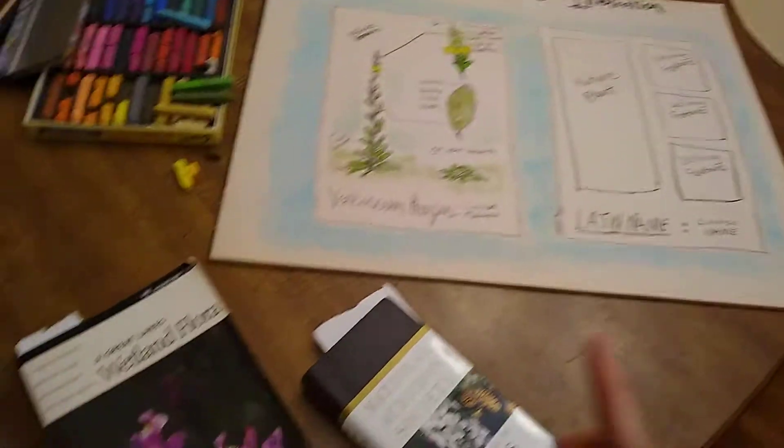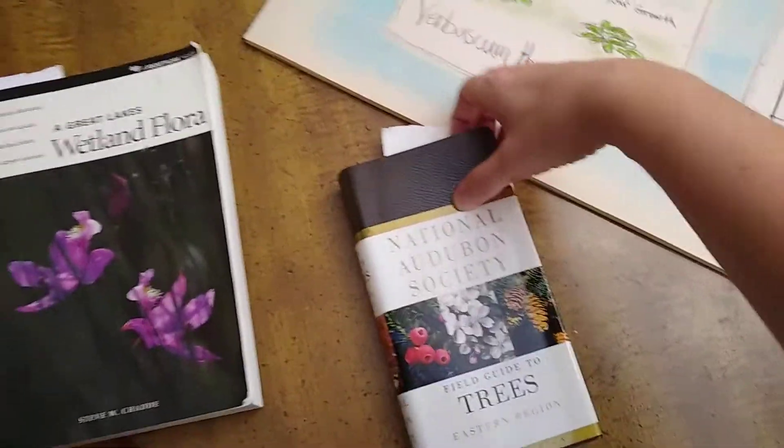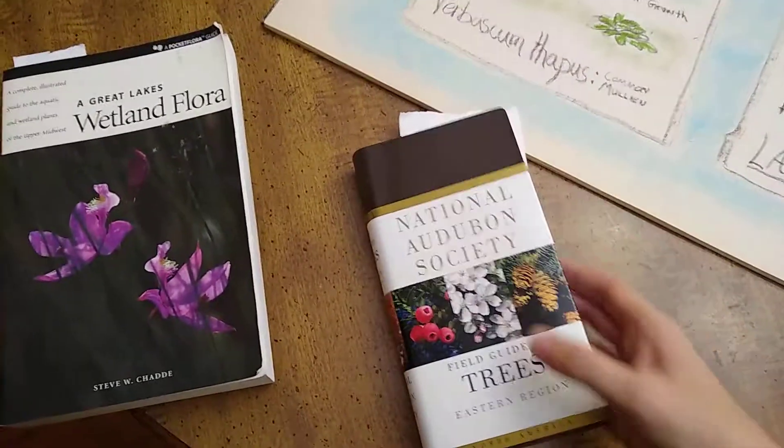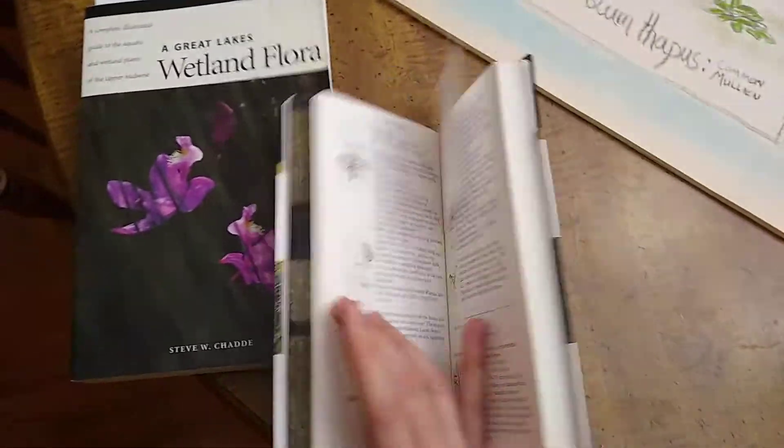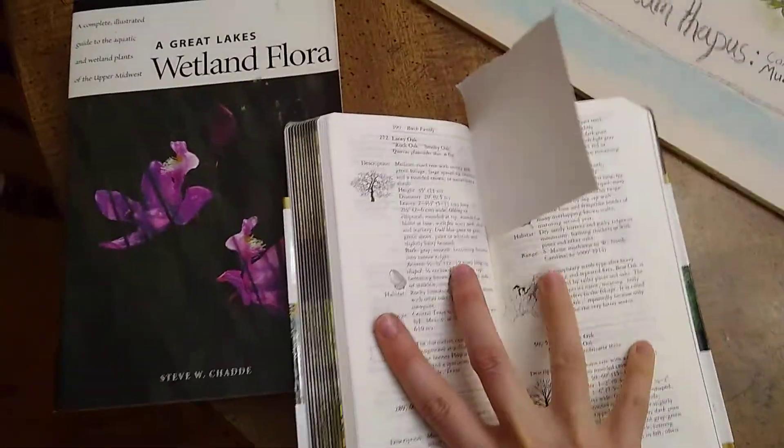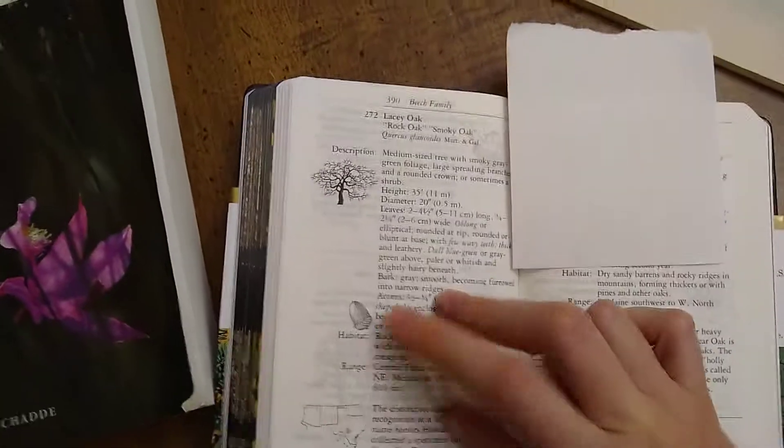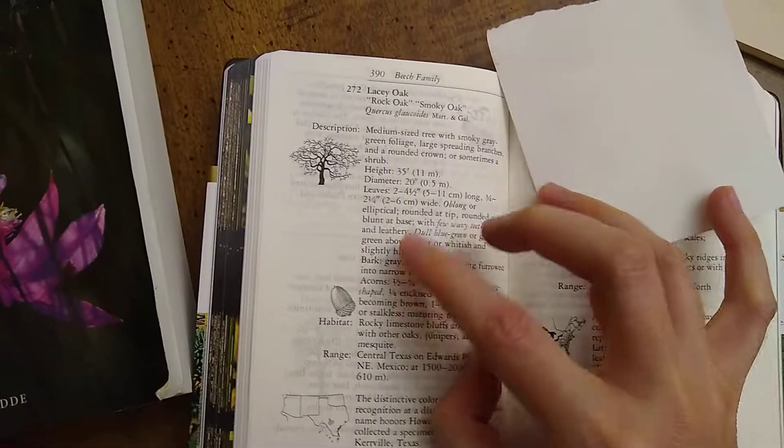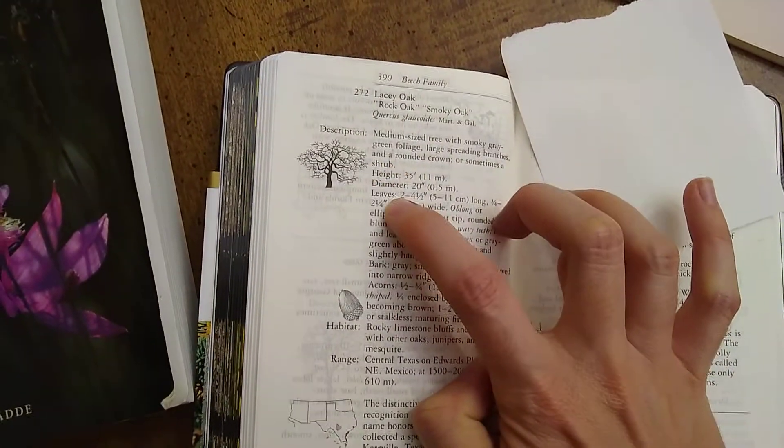Let's look at some resources. Here's the National Audubon Society Field Guide to Trees. Here you can find all the same information. The latin name, the common name.